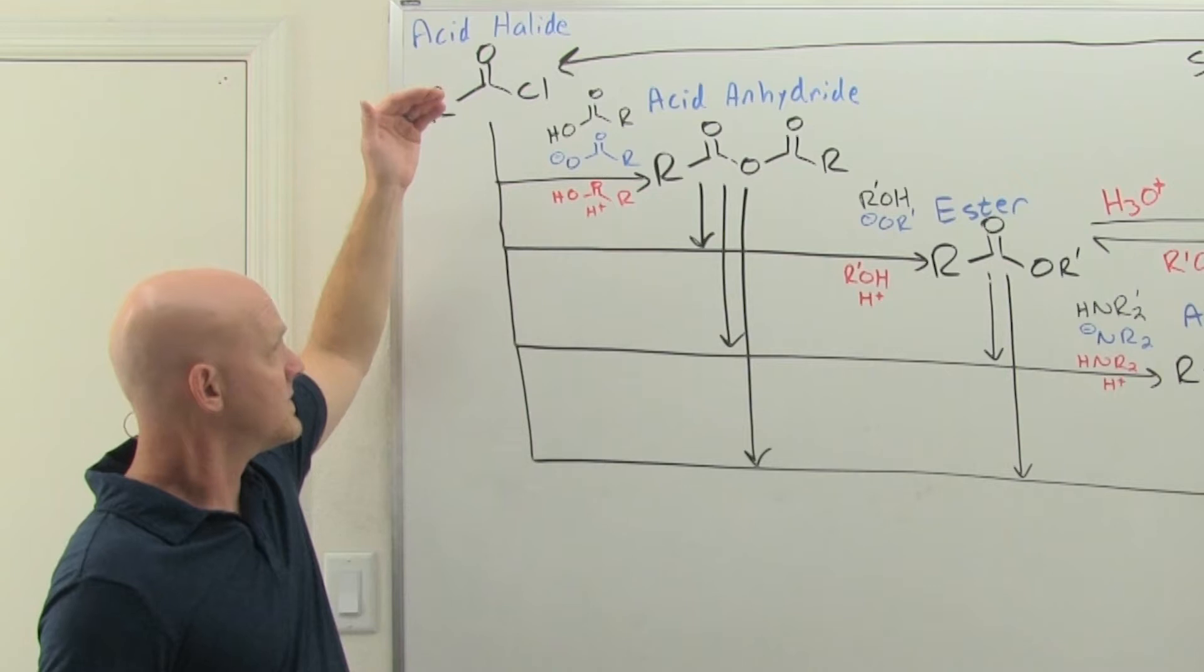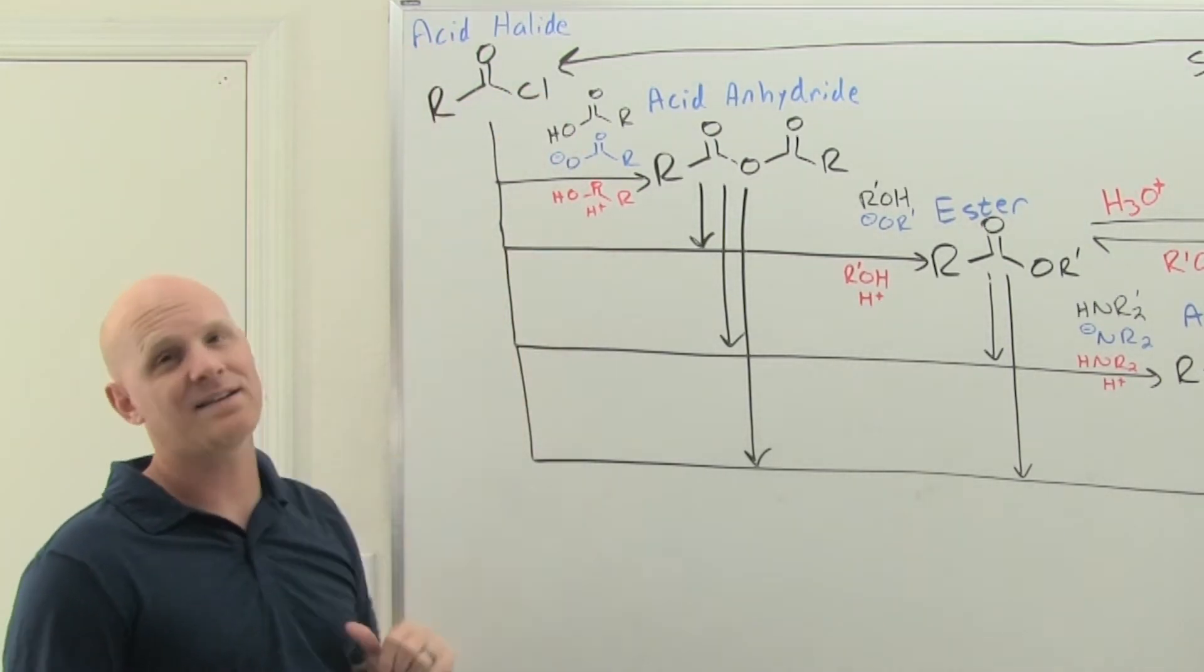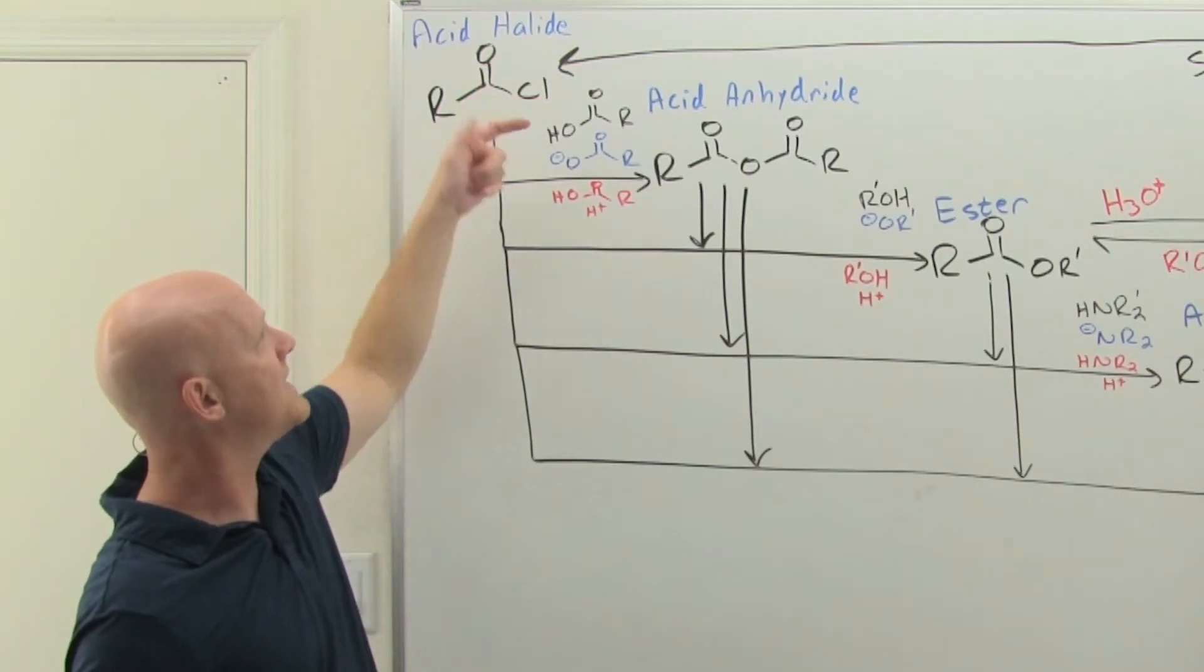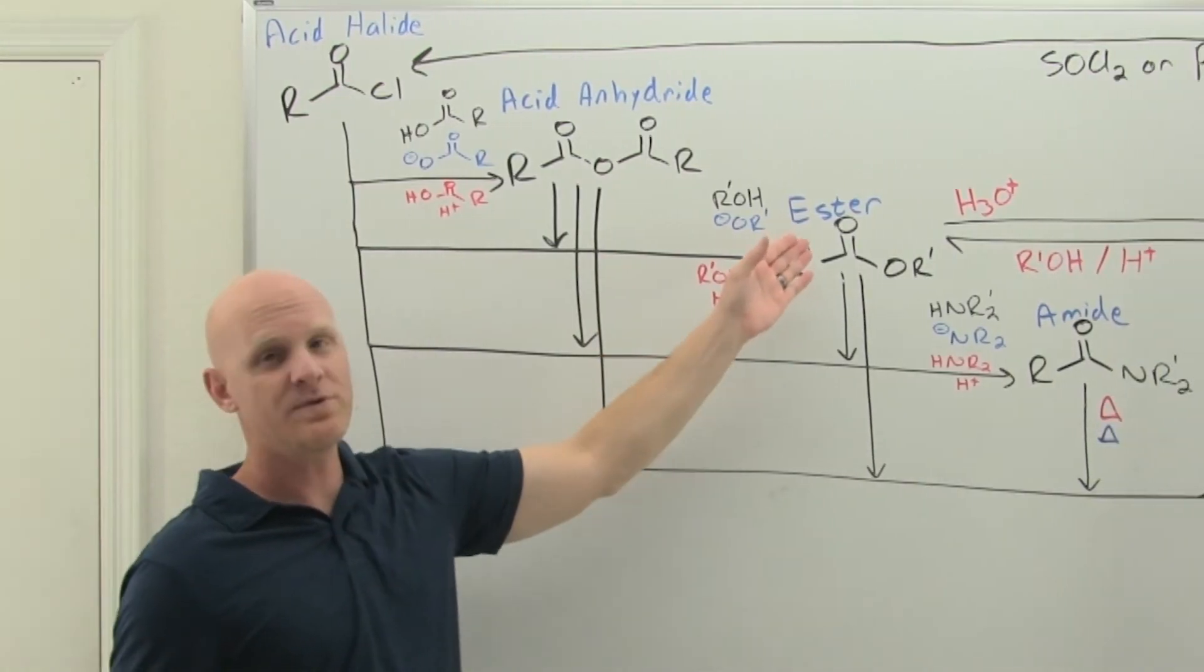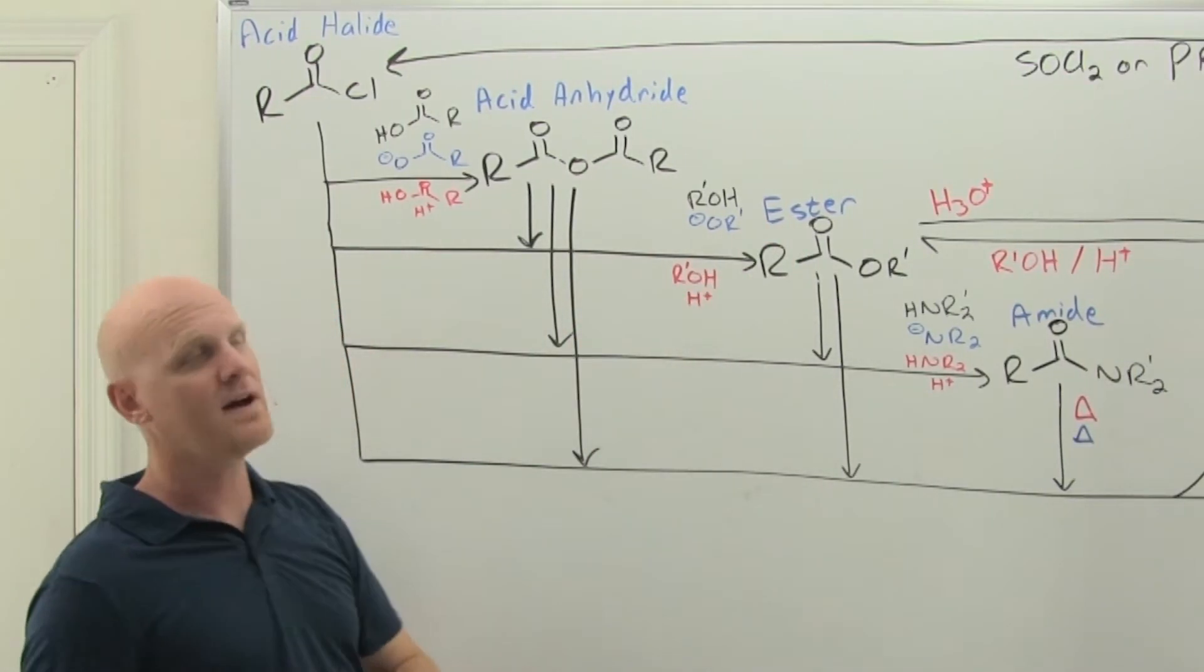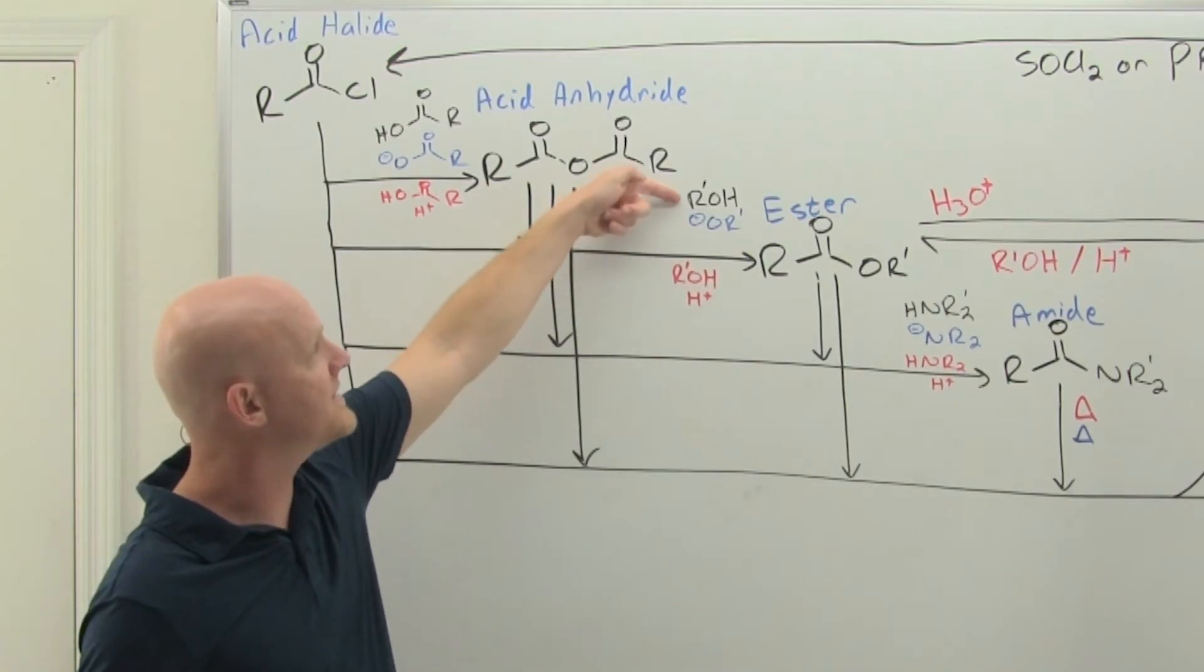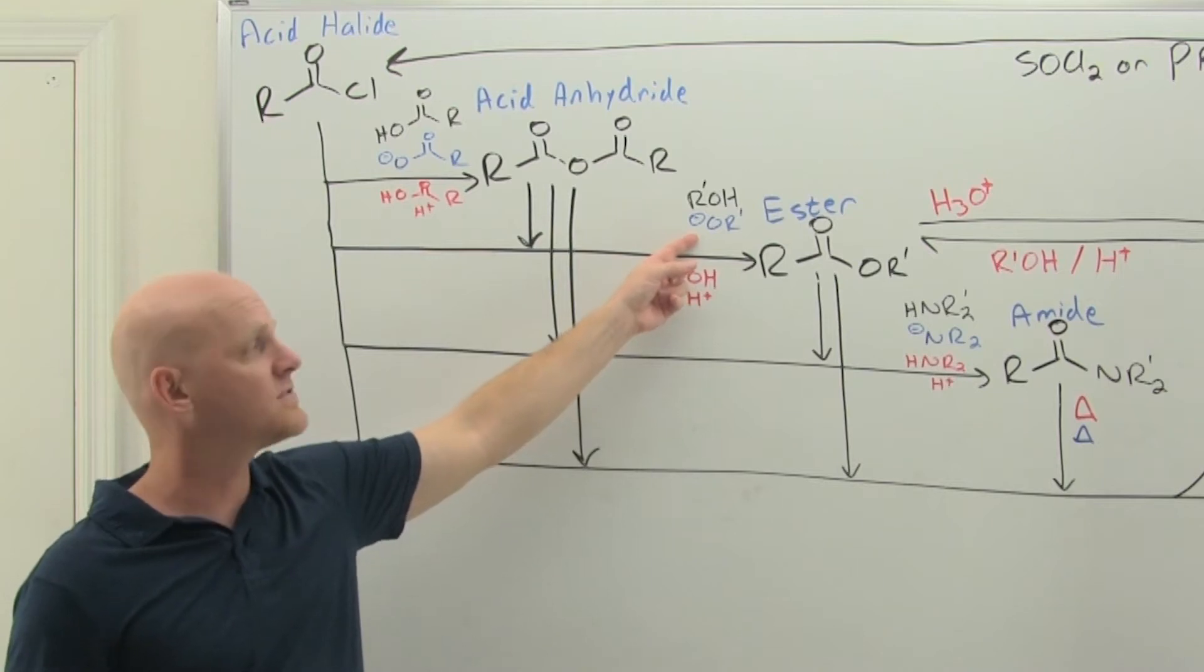To make the anhydride, typically you're going to do it uncatalyzed or base-catalyzed with an acid chloride. Add the appropriate carboxylic acid or carboxylate to make the anhydride. Same thing with the ester: the alcohol-acid combination is not normally done with acyl halides in acid-catalyzed conditions. I've only included the uncatalyzed reaction with the appropriate alcohol or the base-catalyzed reaction with the appropriate alkoxide ion.